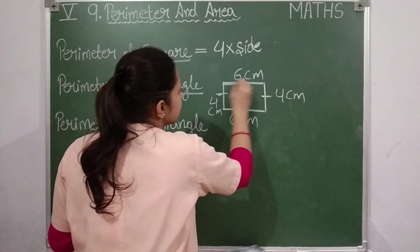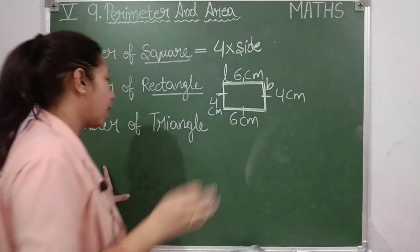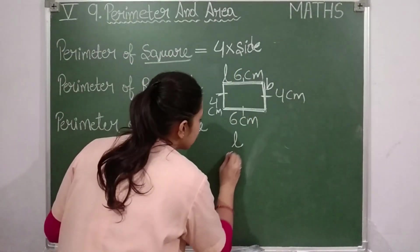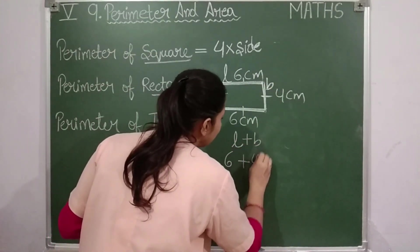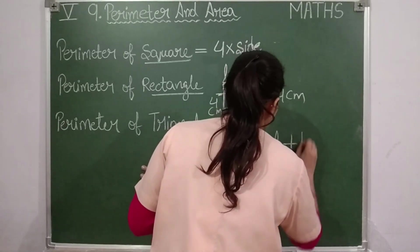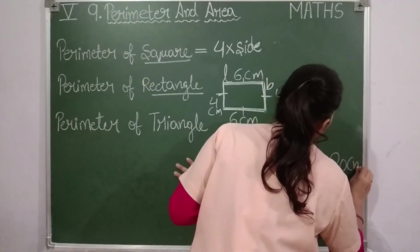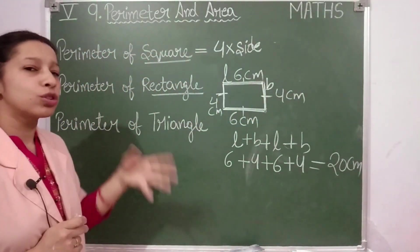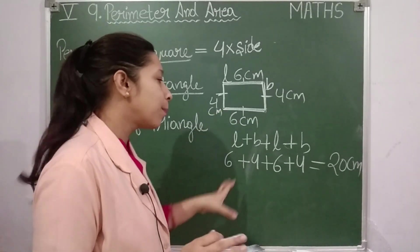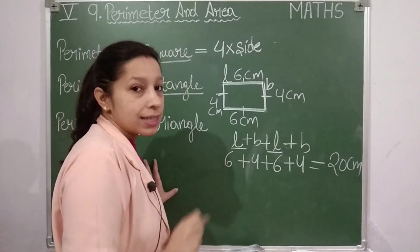One more thing about a rectangle: the longer sides are known as length and the shorter sides are the breadth. So what I have to do: first I take length, which is six centimeters, then I add breadth, which is four centimeters, then again length six centimeters, then again breadth four centimeters. Adding: six plus six is twelve, plus four is sixteen, plus four is twenty. So the perimeter of the rectangle is twenty centimeters.